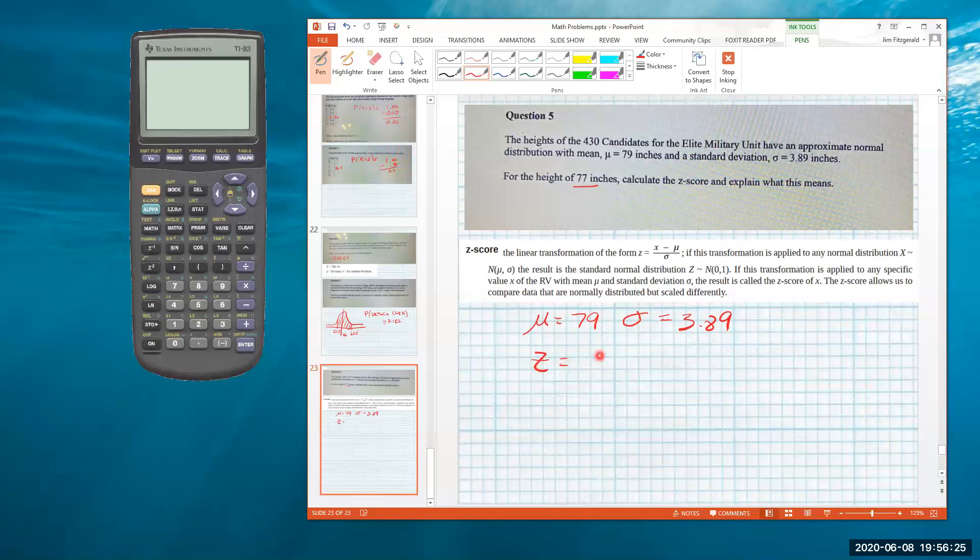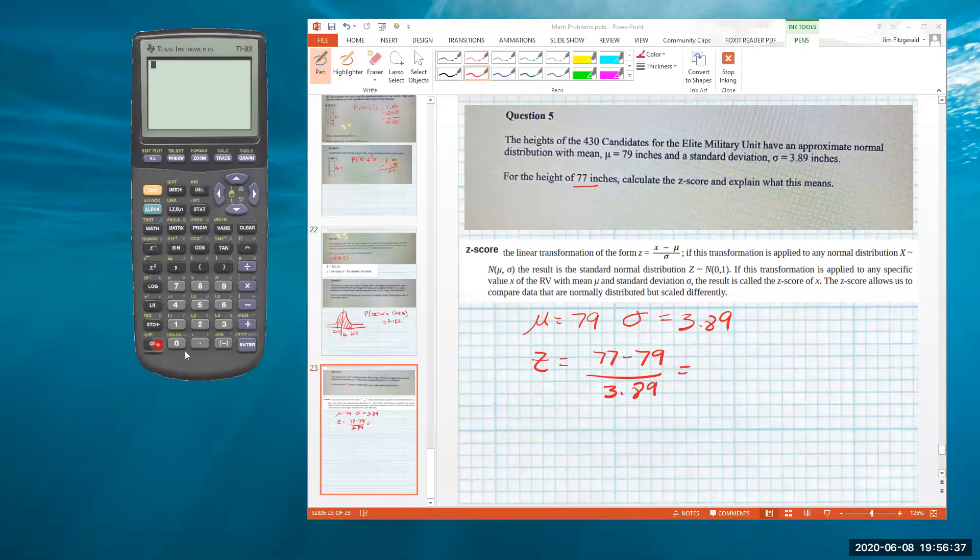So z is 77 minus 79 divided by 3.89, and so that's going to get negative 0.514.